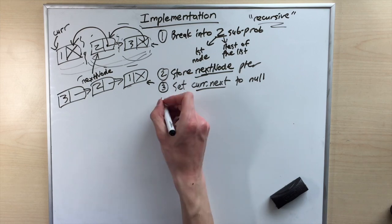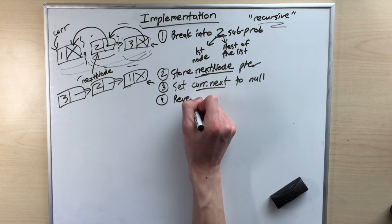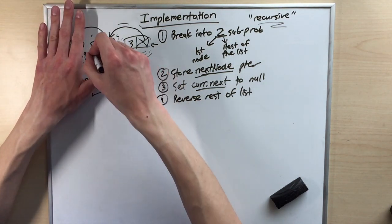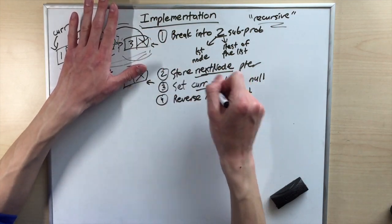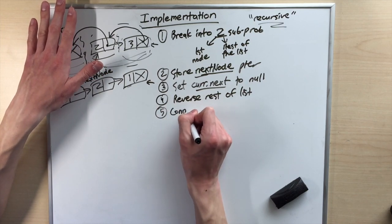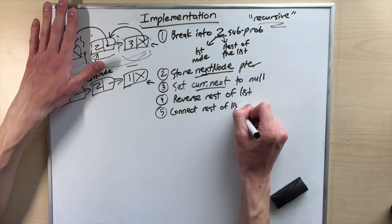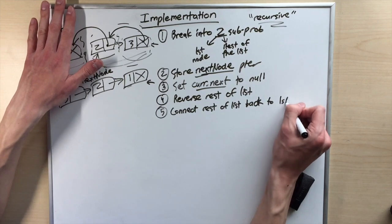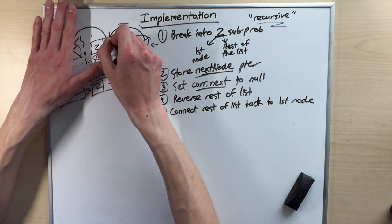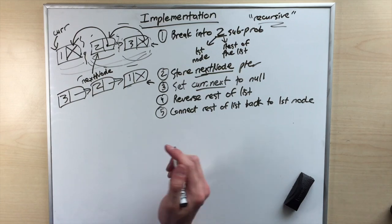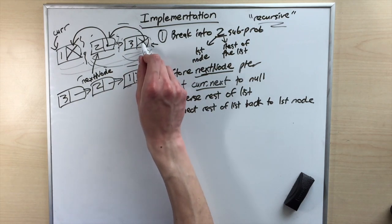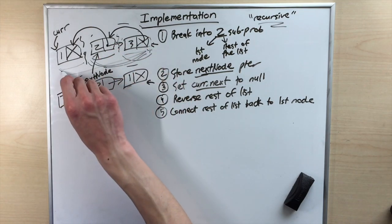Setting cur.next to null makes our first node not point to any other nodes, because at the end of the reversal process it'll become the last node. Then we have to reverse the rest of the list — after we set these pointers, we forget about the first node, let the reversal run its process, and then connect the rest of the list back to the first node. We assume that these steps will work for our smaller problems, going from size one up to size two up to size three.